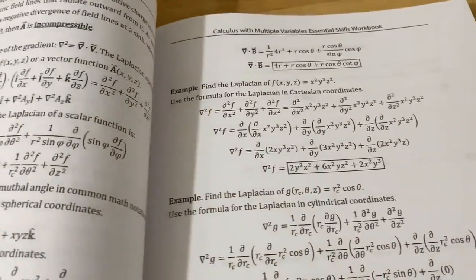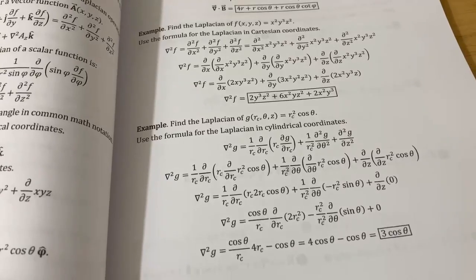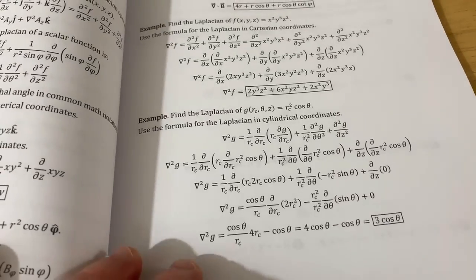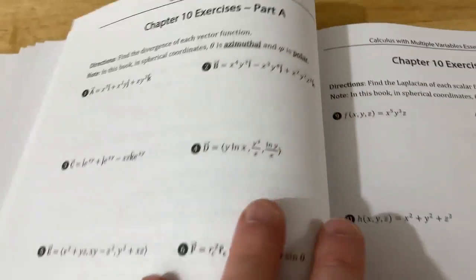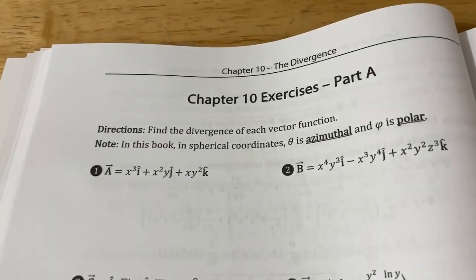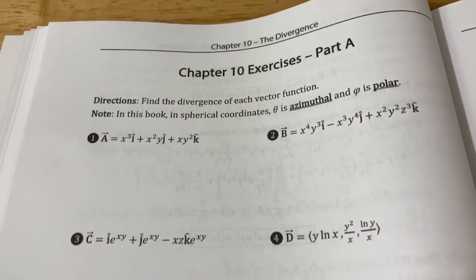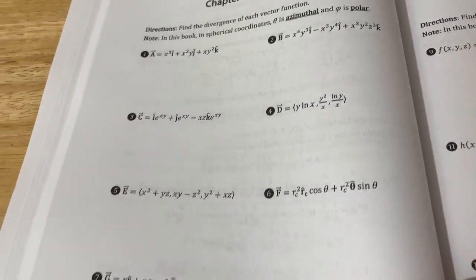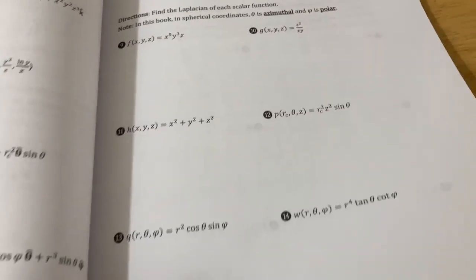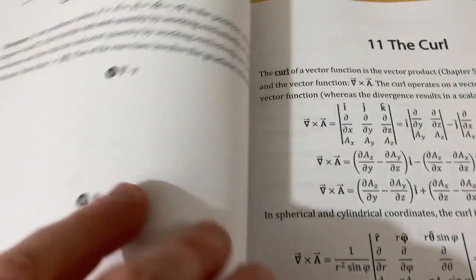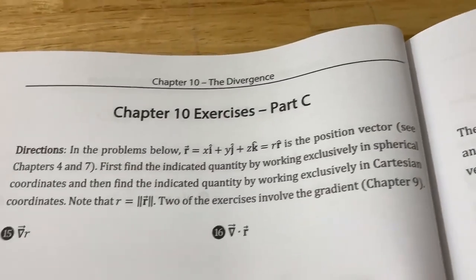And again, after you go through all this information carefully with a piece of paper and a pencil and work through the examples, you have all of these awesome problems to do. So here you have to find the divergence of each vector function. And again, you can write in the book if you choose to do that. And then over here, you have to find the Laplacian of each scalar function.